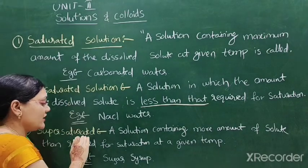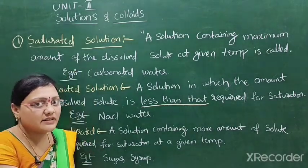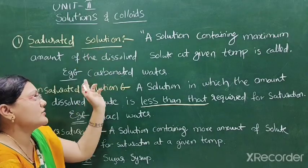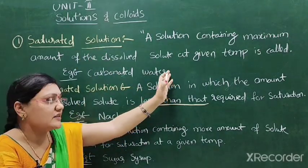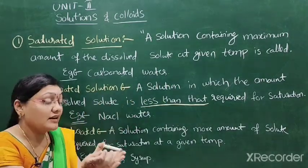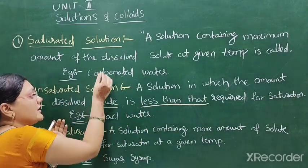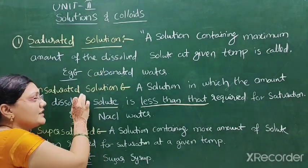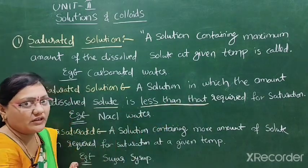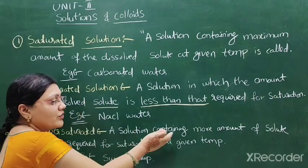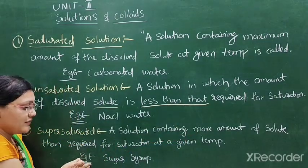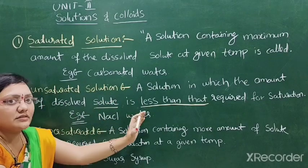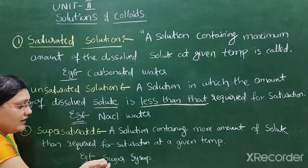To summarize: saturated solution contains the maximum amount of dissolved solute — example, carbonated or soda water. Unsaturated solution contains less solute than required for saturation — example, salt in water. Supersaturated solution contains more solute than required for saturation — example, sugar syrup.